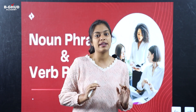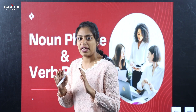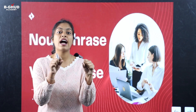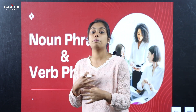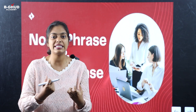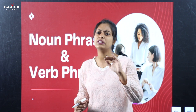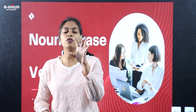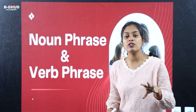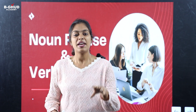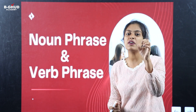First of all, what do we call a noun in English? A noun is a name — names of individuals or places. Then what is a verb? We use the verb to show action. A phrase that comes before a noun is a noun phrase. A phrase that follows a verb is a verb phrase. We call them noun phrase and verb phrase.